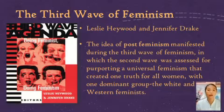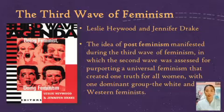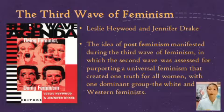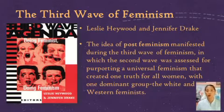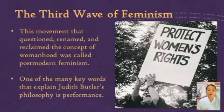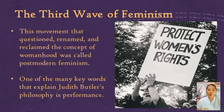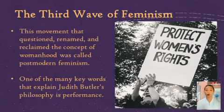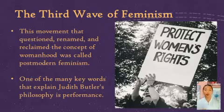With one dominant group — the white, Western feminists — according to Leslie Haywood and Jennifer Drake, directing the movement's concerns. Post-feminism sought to critique previous feminisms with regard to what work had yet to be done. Despite the differences in the experience of women, the call for sisterhood was present, as was embracing the differences of women around the world. This movement that questions, renames, and reclaims the concept of womanhood was called postmodern feminism. One of the key words explaining Judith Butler's philosophy is performance: gender is performed, and one's identity is shaped through the performance of traits that are gendered. The performance of gender further proved that it was a social construct that should not limit a person's identity.